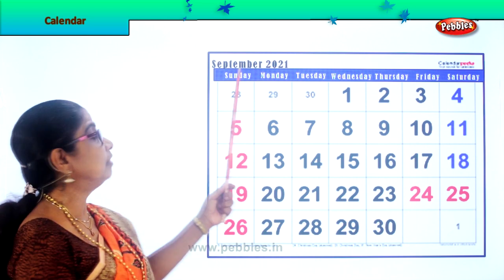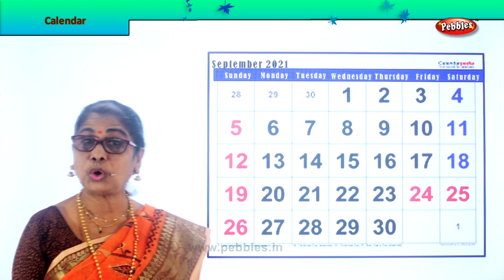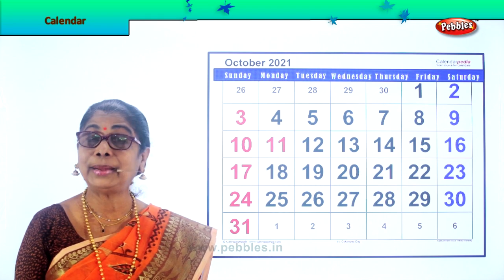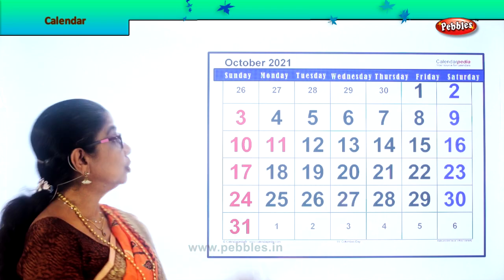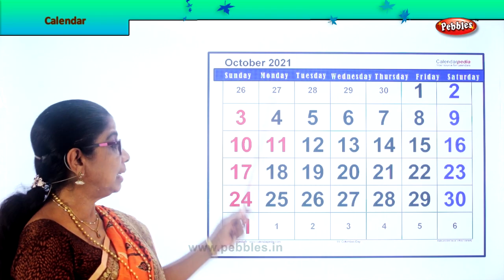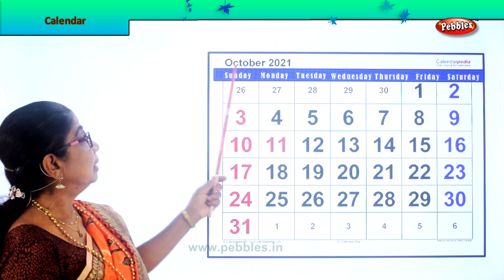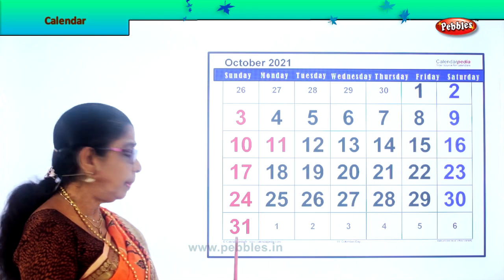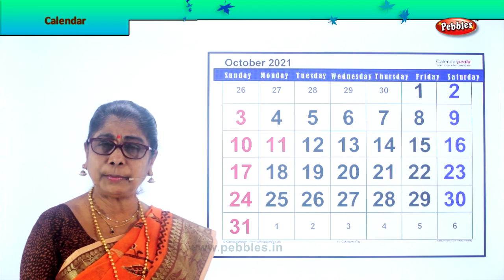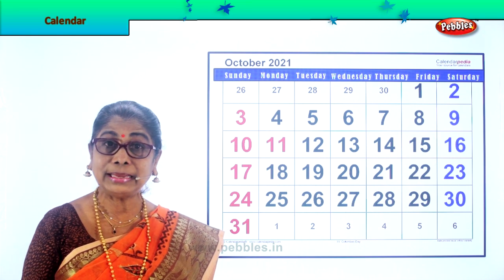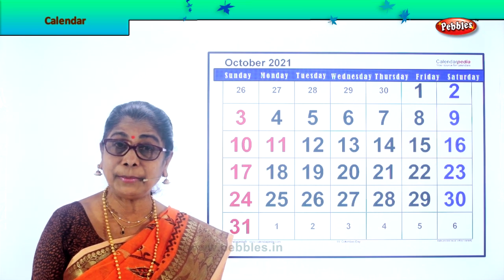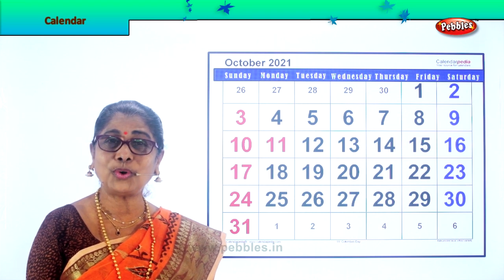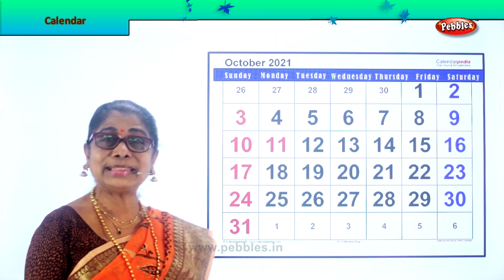Let's look at the next month. After September follows October — a month of celebration. How many days are there in October? 31. What is special about October? Your Diwali will be coming anytime. You look forward to the celebration.